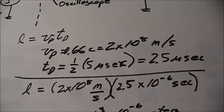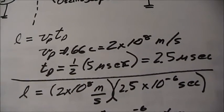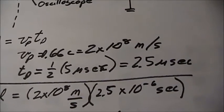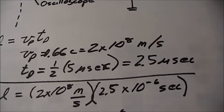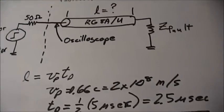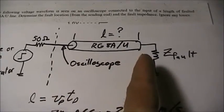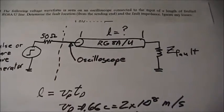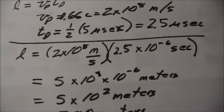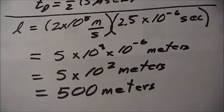So here's the math. The length is equal to velocity of propagation times time delay. The velocity of propagation is 0.66c on that type of cable, which makes 2 times 10 to the 8th meters per second. The time delay is actually 2.5 microseconds. So if we work the math out, 2 times 10 to the 8th meters per second times 2.5 microseconds, it turns out to be a 500 meter cable.